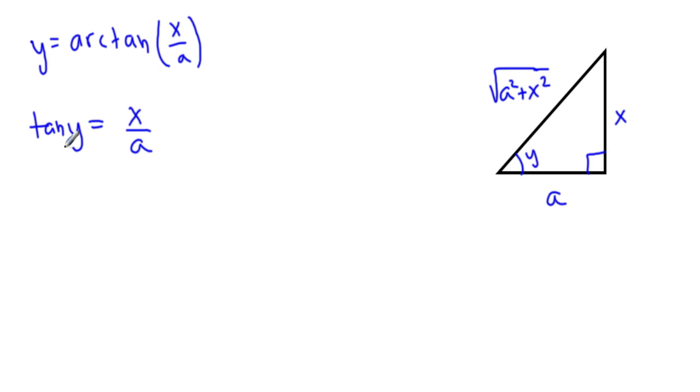Okay, so now differentiate this with respect to x and we get secant squared of y times the derivative of the inside from the chain rule. We have dy over dx equals the derivative of x over a is 1 over a.